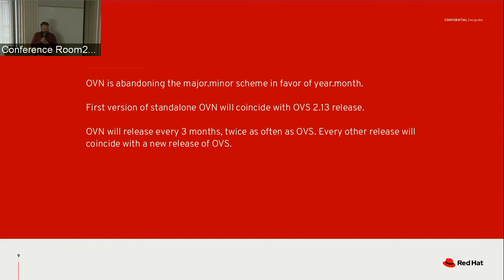OVN is planning to release more often than OVS. The reason is that OVN has a lot of user-facing features that people request and they don't want to wait six months for. Giving them a shorter turnaround time means we can put releases out more quickly. And because the development time is also shorter, it should mean hopefully the same amount of effort towards putting out a release of OVN as it currently takes for a release of OVS.